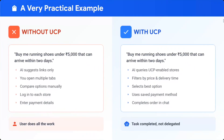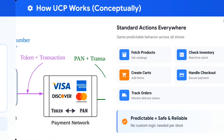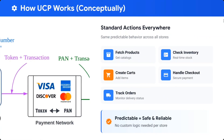A practical example: without UCP, if you say 'buy me running shoes under 5000 that can arrive in two days,' AI only suggests links, you open multiple tabs, manually select items, log into each store, and enter payment details — the user does all the work, AI is just suggesting. With UCP, AI queries UCP-enabled stores, filters by price and delivery time, selects the best option, uses saved payment methods, and completes the order in chat — nothing is done by the user.